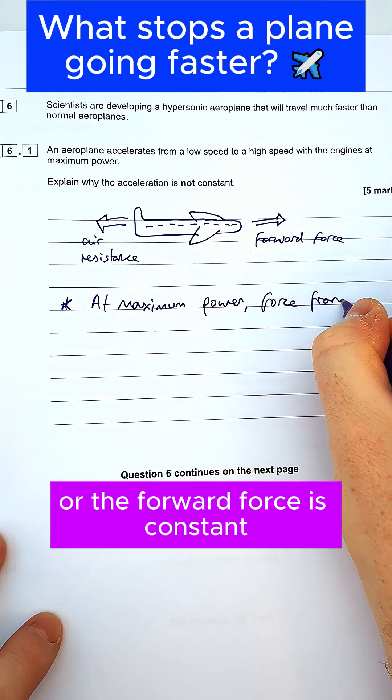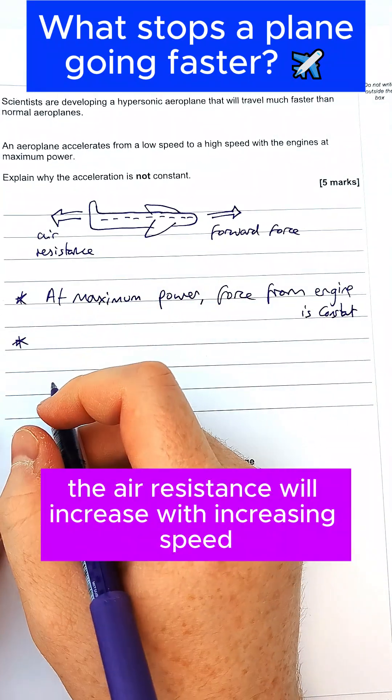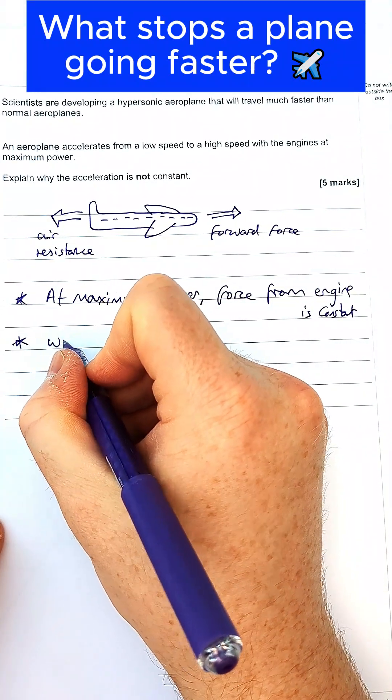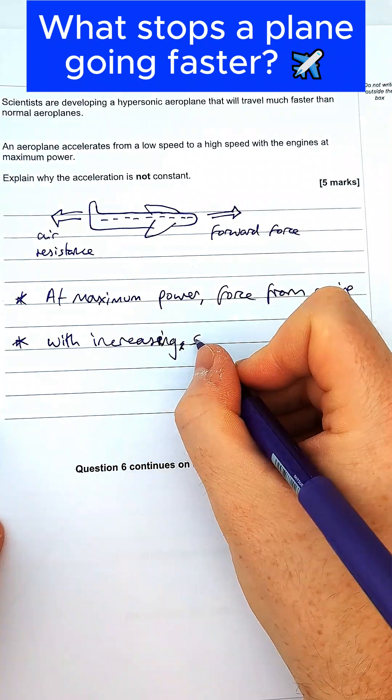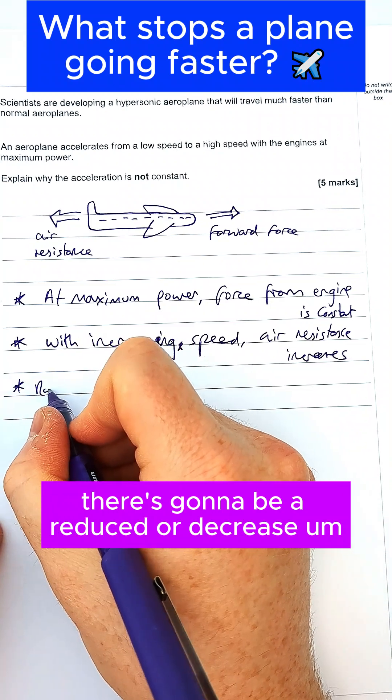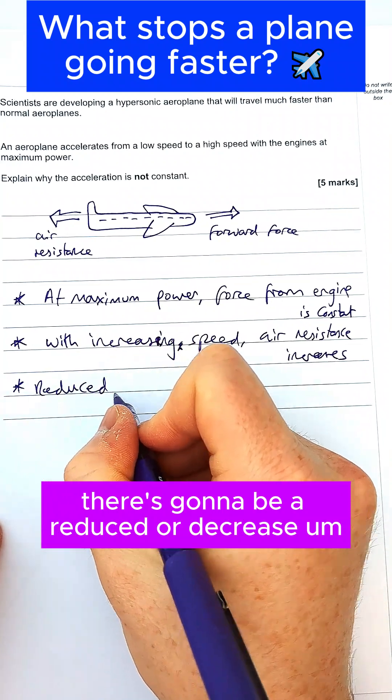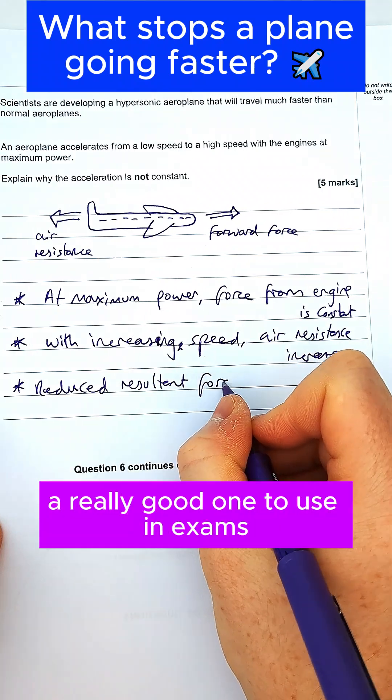After a while, the air resistance will increase with increasing speed. It's going to hit more air particles, so the air resistance increases. As that happens, there is going to be a reduced or decreased resultant force. If you don't know what resultant force means, a really good one to use in exams - it basically means this minus this.